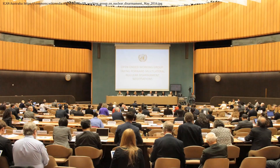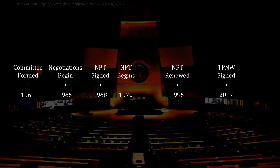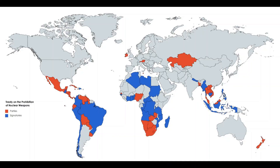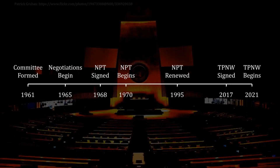The other step has been to work on a treaty like the NPT but one that does not contain the special exemption for those five recognized states. Work on this began in the 2010s, with the Treaty on the Prohibition of Nuclear Weapons being signed in 2017. Membership closely follows those nuclear weapons free zones — countries in red are full-fledged members who have both signed and ratified it, while countries in blue have signed but not yet ratified. They have some time, as the treaty itself will not begin until 2021.